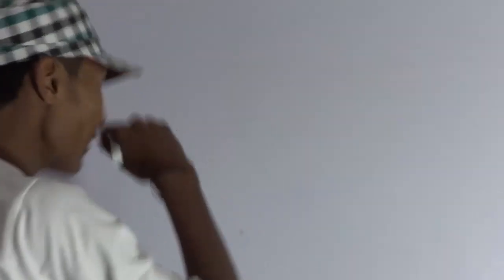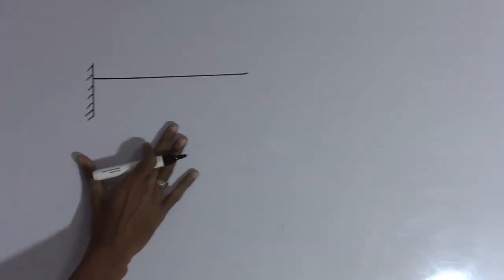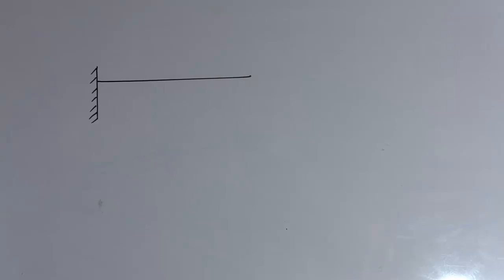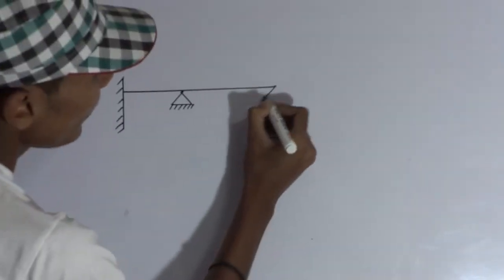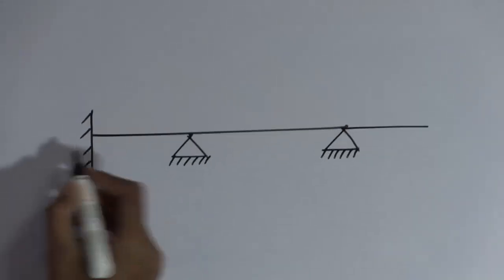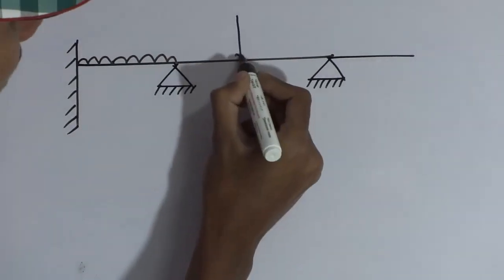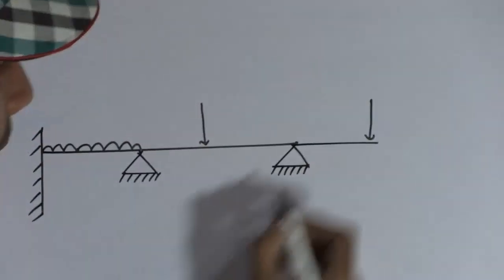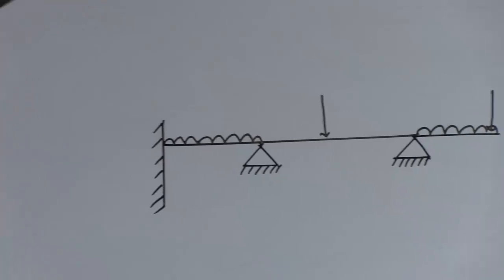Now, the 3-moment theorem in fixed beam — whenever we take a fixed beam, it is fixed at the ends. A hinge support is given here, and here also a hinge support is given. Sometimes overhanging needs to be considered. In fixed beam we are taking UDL at one portion, a point load at another portion, and sometimes there is UDL also. Such a type of question is not much hard — quite easy.